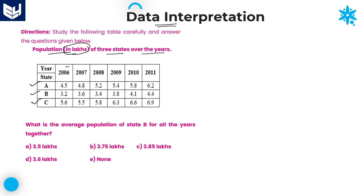And the years are 2006, 2007, 2008, 2009, 2010, and 2011. These are the six different years. And each and every value in the table is given in terms of lakhs.